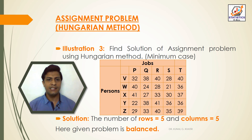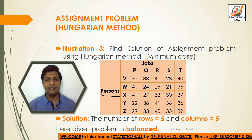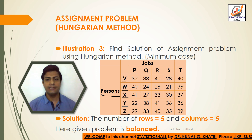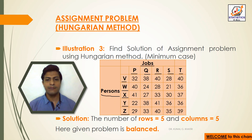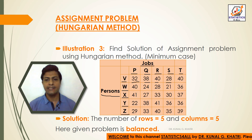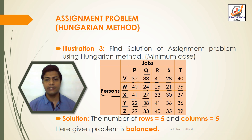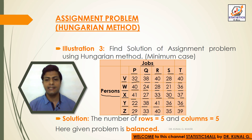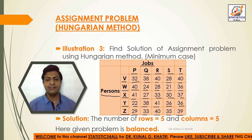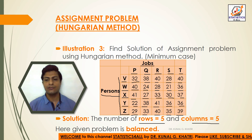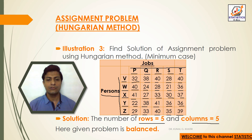Assignment problem by Hungarian method, illustrative example number 3. Find the solution of the assignment problem using the Hungarian method, minimum case. Persons are given in rows: V, W, X, Y, and Z. Jobs are given in columns: P, Q, R, S, T. The values are given in the matrix. The total number of rows equals 5 and the number of columns also equals 5, so the given problem is balanced.